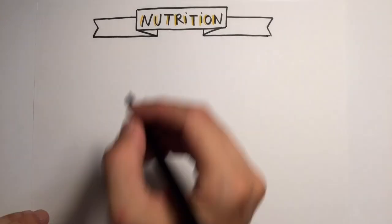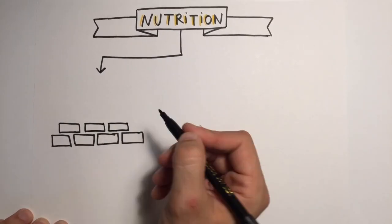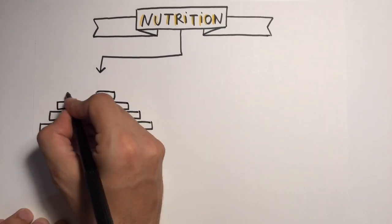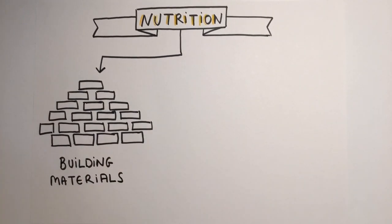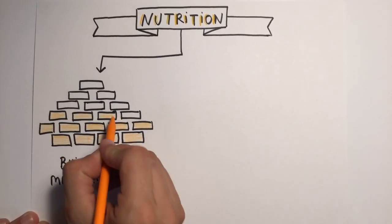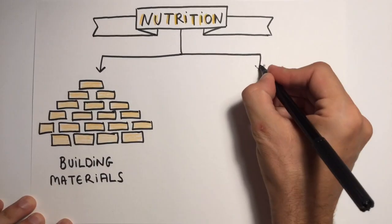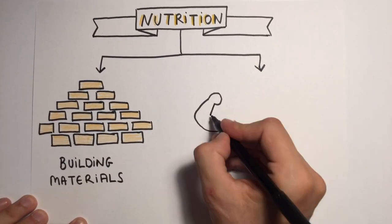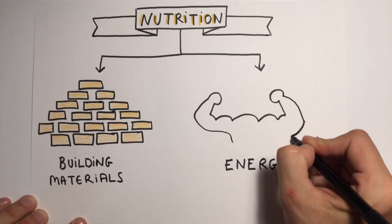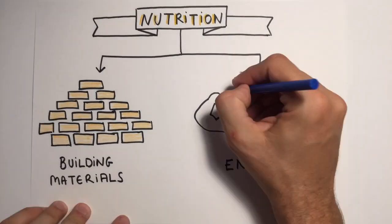Nutrition is a combination of processes that supply our body with the building materials and energy we need to live. Food contains simple substances called nutrients that provide the building materials and energy our body needs to grow and work.